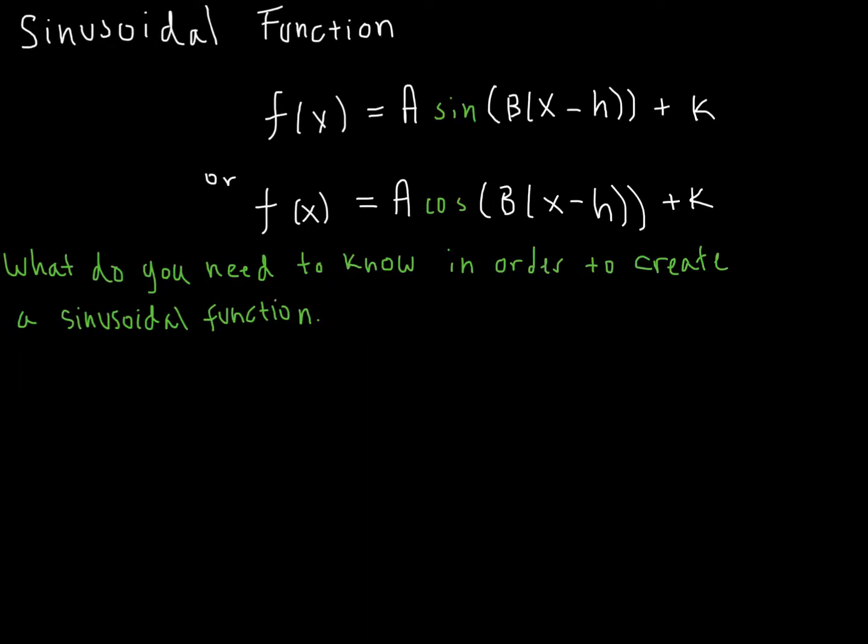So now we want to talk about how we're going to construct sinusoidal functions. So remember that a sinusoidal function has this general form. Every sinusoidal function has this general form. The absolute value of A is the amplitude. The period is 2π over the absolute value of B. H is your phase shift, and K is your midline, right? And it can either be a sine or a cosine function. And so we want to think about, in any situation, what are we going to need to know in order to create a sinusoidal function? So think about the general form and just think about what are the things that I'm going to need to create this. So go ahead and start your own list. Pause the video right now and create a list and we'll talk.